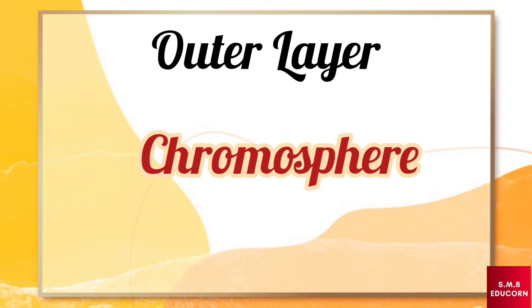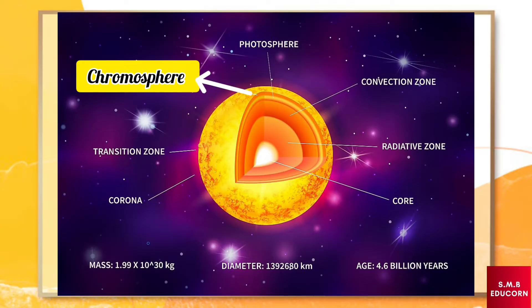Then we have chromosphere. The layer above the photosphere is the chromosphere. The literal meaning of the chromosphere is sphere of color. Temperature in the chromosphere range from 3,700 degree Celsius to 7,700 degree Celsius.